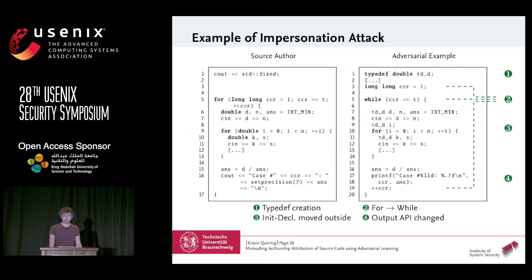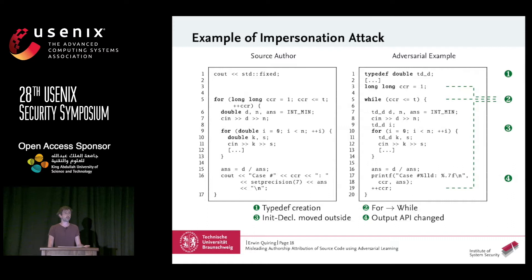Here's a real-world example from our evaluation. We can see that we do not just add implausible garbage to the code — the code remains quite normal. In the first step, for example, we add some typedefs to mimic behavior from a developer who prefers typedefs. Then we replaced a for block by a while loop and changed the output API. The resulting adversarial example is still a normal source code, but now it is classified as the other developer we targeted.